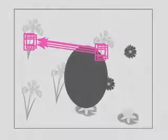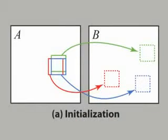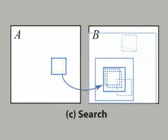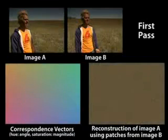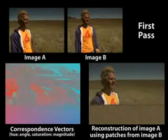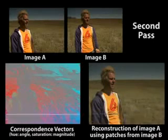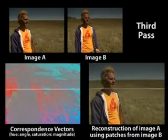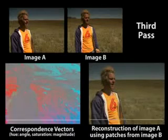Armed with these two observations, we begin with a random initial guess for the patch correspondences and iteratively improve the results. Our algorithm alternates between propagating good correspondences to neighboring patches and sampling the nearby image space to find even better correspondences. Although the initialization is completely random, a few lucky guesses propagate quickly to neighboring pixels in the propagation phase. The random sampling phase complements this greedy approach by helping to avoid local minima.